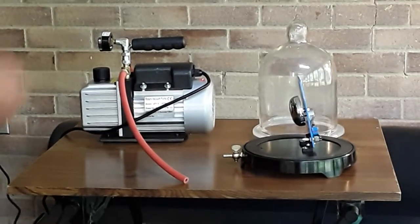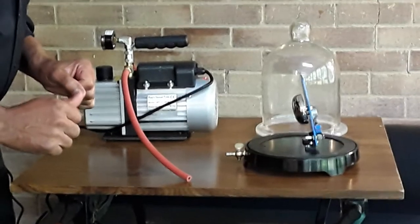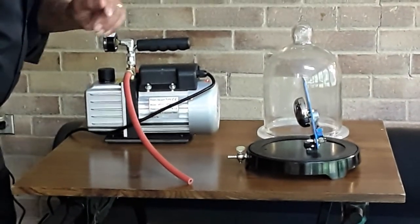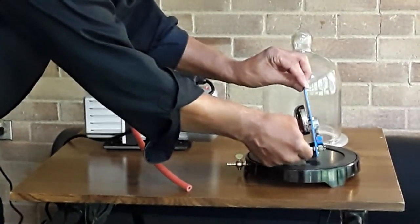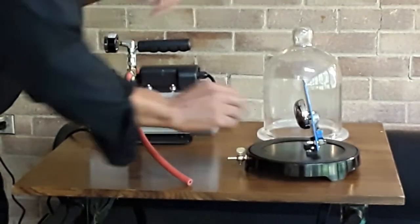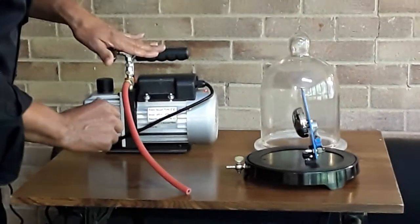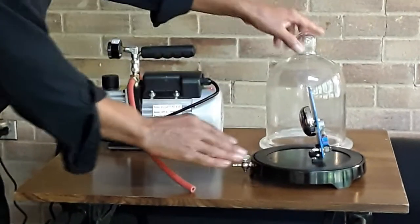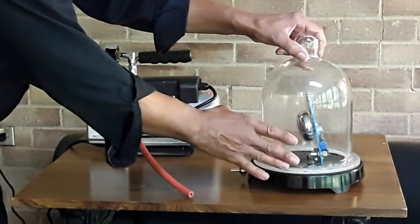All right guys, so this demonstration will show how sound waves travel through air. What we have here is a bell jar with a base, a vacuum pump, and there's a valve attached to the base so that we can suck out the air once we put on this bell jar. We'll suck the air out of the system and see what happens to the sound wave when there's a vacuum surrounding it.